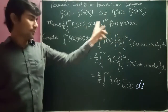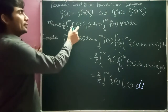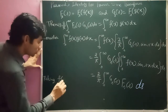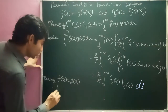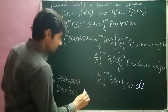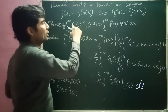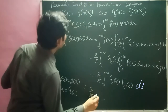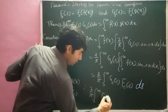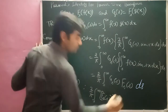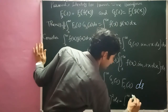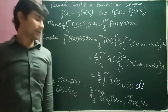तो हमने first part prove कर दिया। अब second part के लिए: f(x) और g(x) को equal लेते हैं, यानि कि Fs(s) और Gs(s) same हो जाएंगे। Therefore expression बन जाएगा: (2/π) integral from 0 to infinity of |Fs(s)|² ds = integral from 0 to infinity of |f(x)|² dx। उसका square बन जाएगा। तो यह sine part भी prove कर दिया।